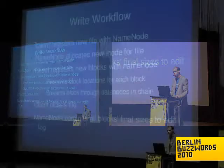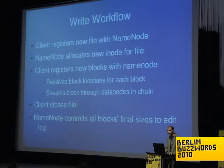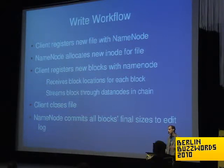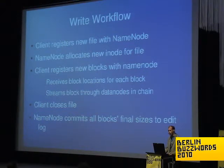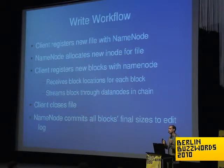Drilling into the write workflow: when you open a file for write, your client connects to the name node and says 'I'm creating a new file.' The name node adds that to its edit log and the client allocates a new inode. Then the client immediately starts trying to write. When you open a file you get back an output stream — all of this is hidden behind it, so from your perspective you're just writing bytes, exactly like writing to an output stream on a local file system or to a socket.